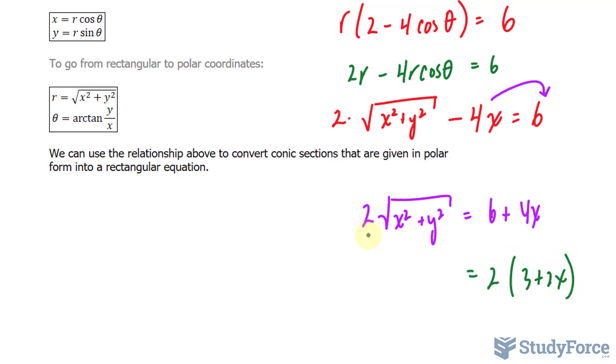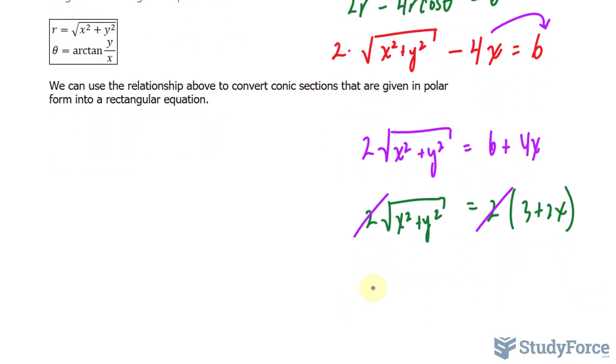And this 2 and this 2, if we divide both sides by 2, let me just rewrite this part, they end up cancelling out. So given the fact that we have a 2 here and a 2 here, they cancel out and this leaves us with the square root of x squared plus y squared is equal to